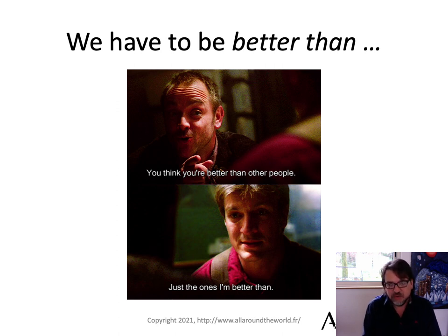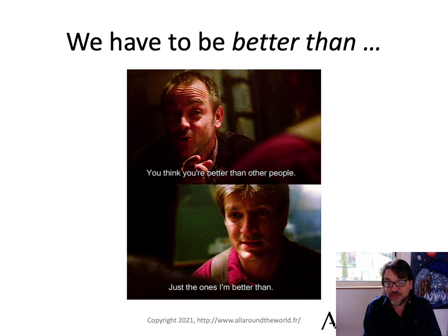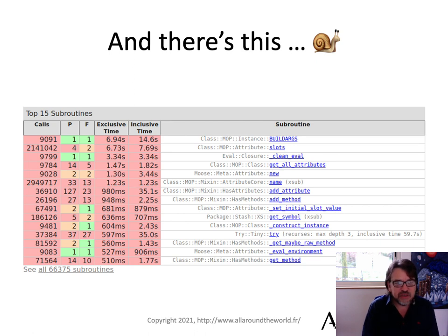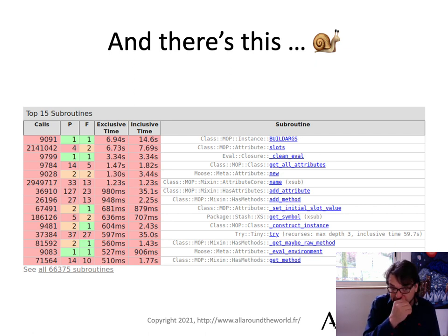There's another reason why we want something in the core. I was debugging a performance problem with a client, and the top 15 slowest subroutines all happened to be related somehow to Moose or Moo — or the MOP, I should say, in this case. And that's frustrating. I don't want to have to keep dealing with stuff like that all the time.